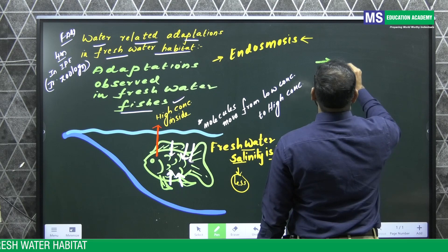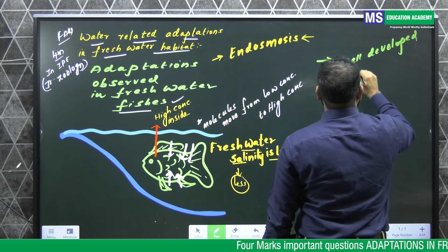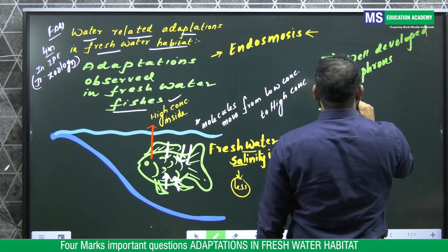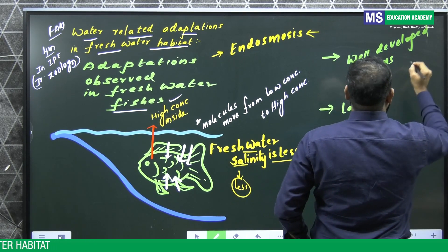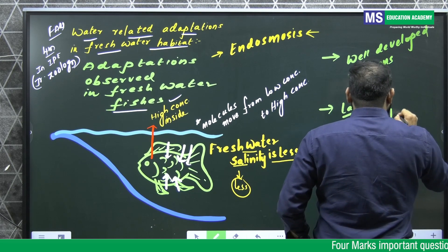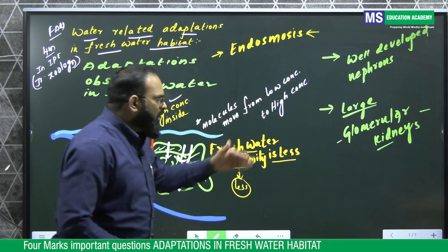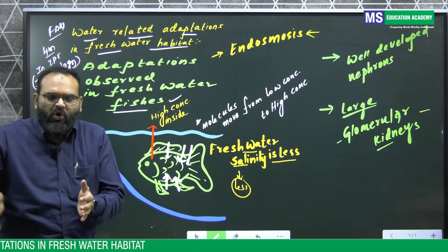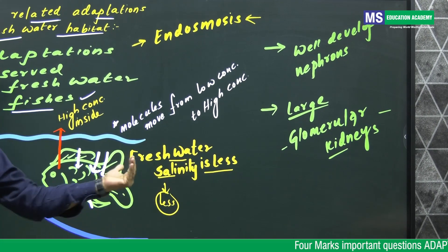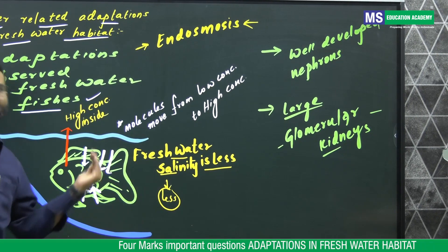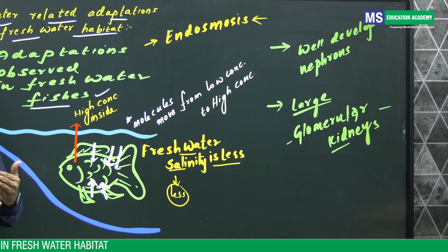For that, it has well-developed nephrons, large glomerular kidneys. More filtration of blood and salts are removed from the body so that the salinity decreases inside the body and it can become equivalent to the habitat salinity. This is how freshwater fishes overcome the problem of osmoregulation.